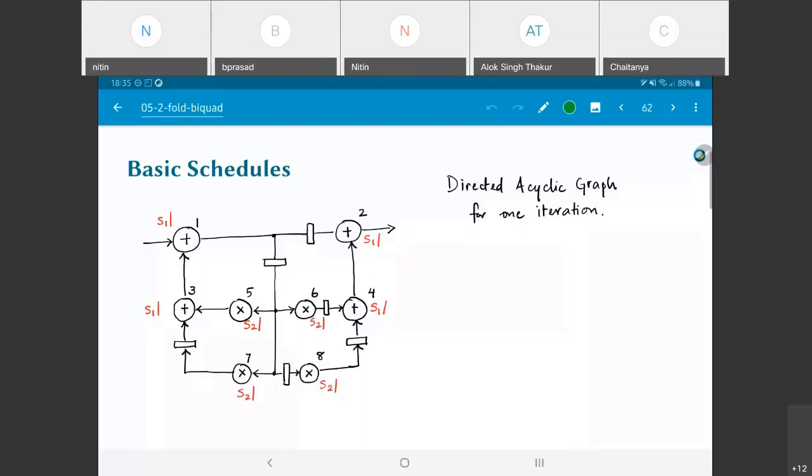So, in order to understand that, what I am going to do is take this entire graph and construct the directed acyclic graph corresponding to one iteration of this. We remove the edges with delays on them, that is to say those edges with delays are the inter-iteration dependencies.